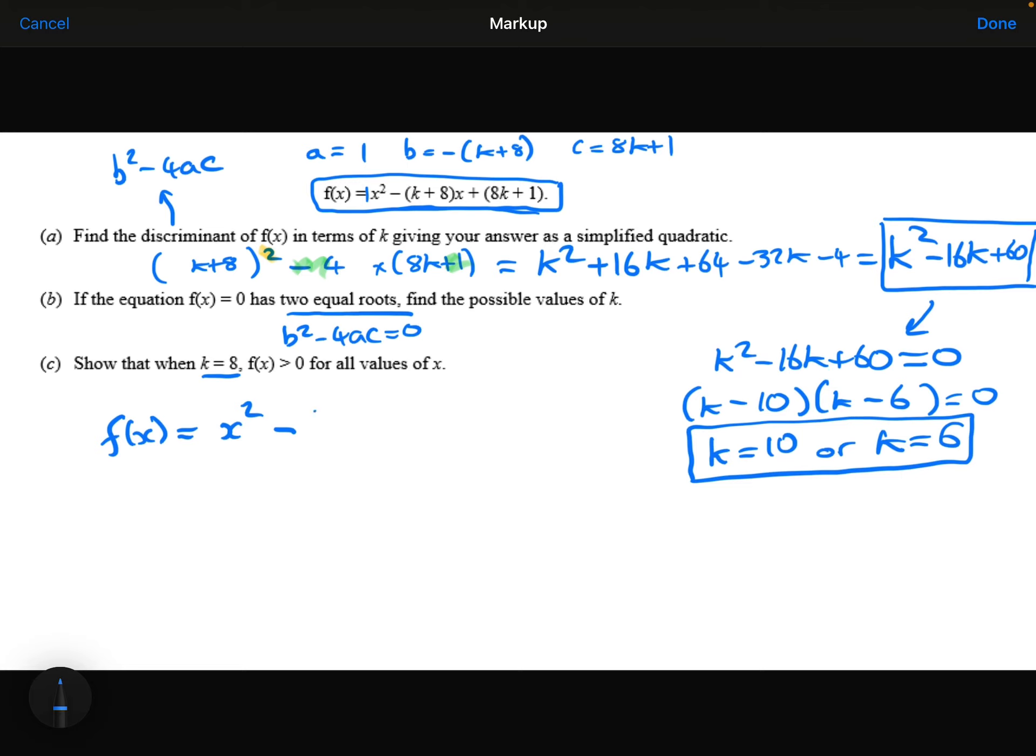Now we've got k plus 8. If k is 8, 8 plus 8 is 16. Plus the 8k plus 1, so 8 times 8 is 64, plus 1 is 65. So this is f(x) when k is 8, and I need to show it's always going to be greater than 0.